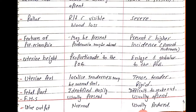Uterine feel: in revealed type, there is local tenderness with normal uterine feel — tenderness can be localized. In concealed or mixed, the uterus feels tender, rigid, and firm. Fetal parts: in revealed type, fetal parts are identified easily; in concealed/mixed, fetal parts are difficult to identify. Fetal heart sound: in revealed type it is usually present; in concealed/mixed it is usually absent. Urine output is normal in revealed type but usually reduced in concealed type.